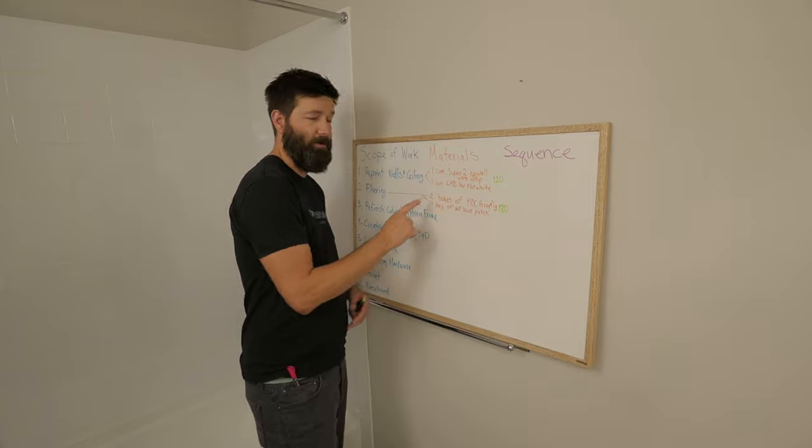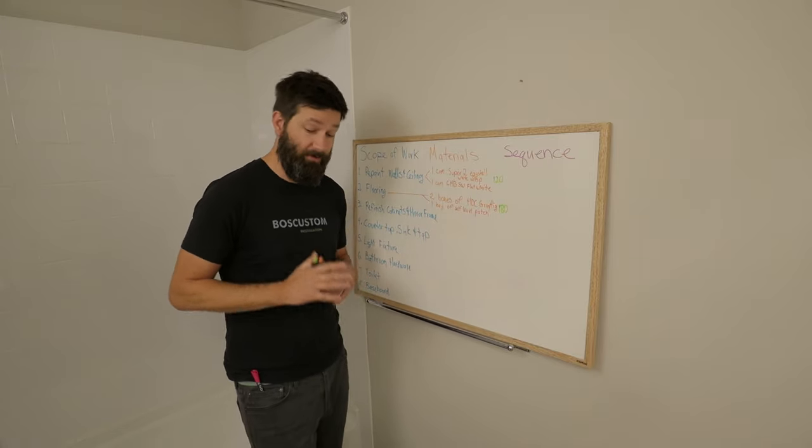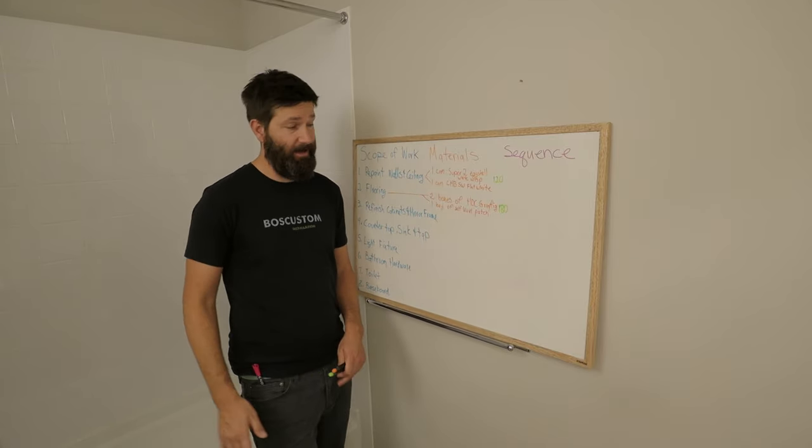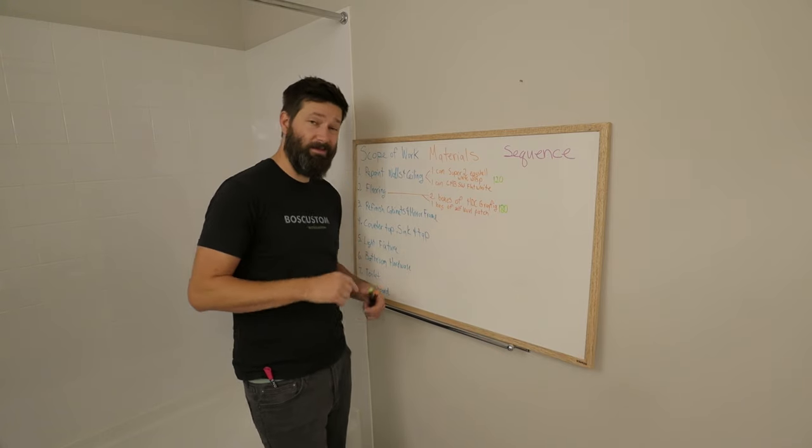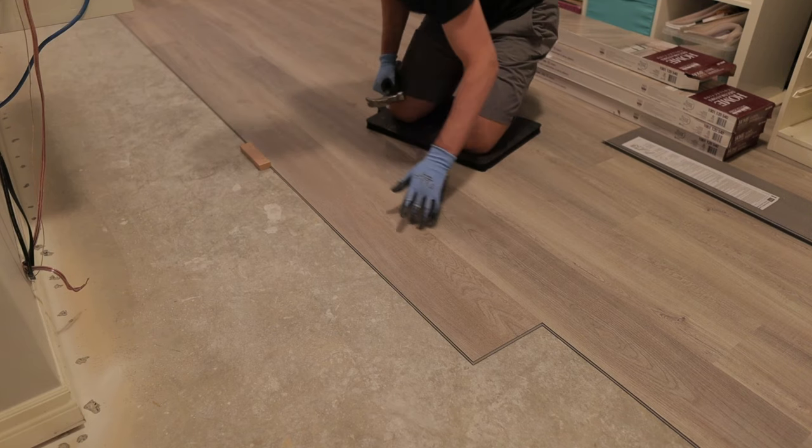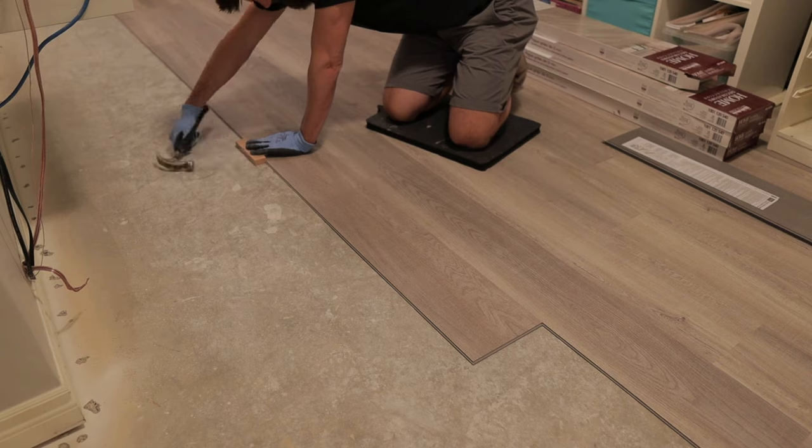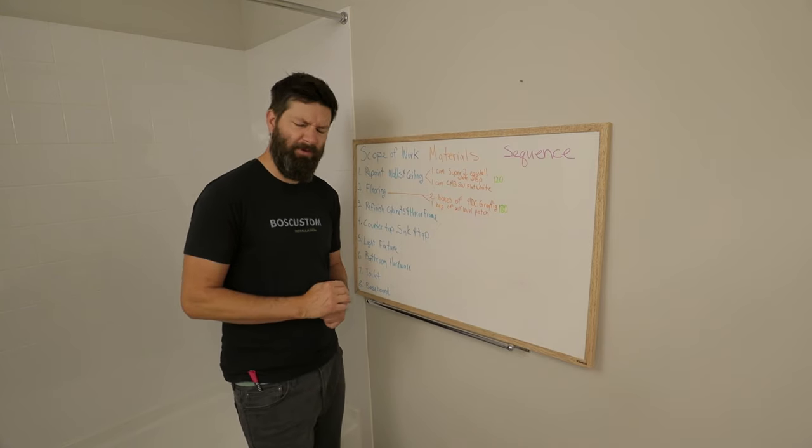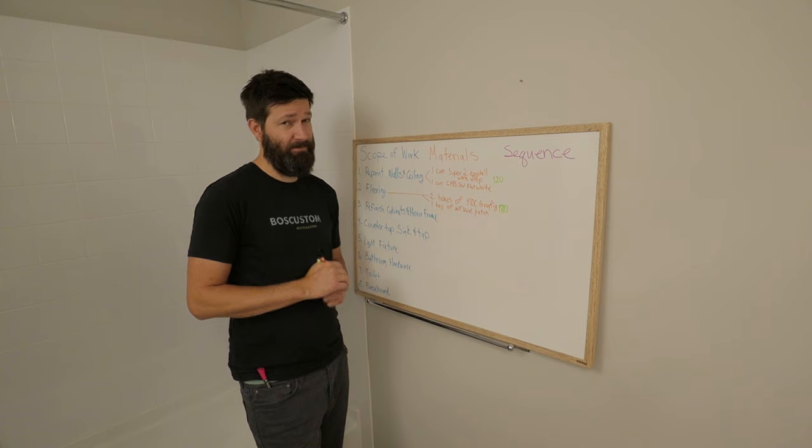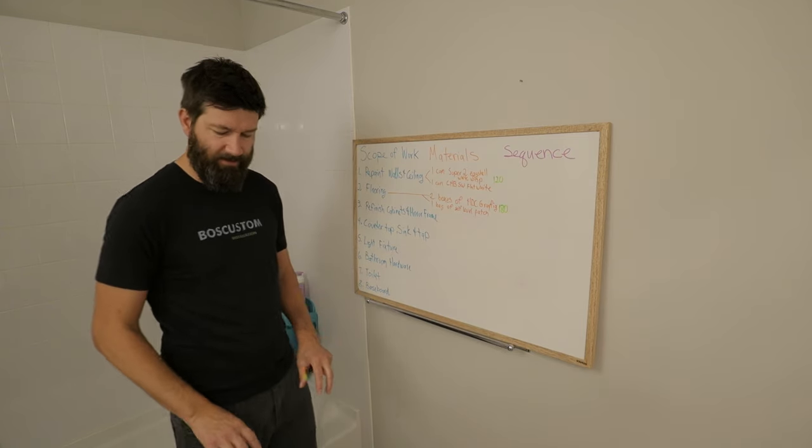So the next thing up is flooring. For the floor in here, I am going to cover over the existing tile with vinyl plank, the same vinyl plank that I installed in the basement. We're going to be unifying the flooring throughout this house. When we first moved in here, I think there was five different types of floor.